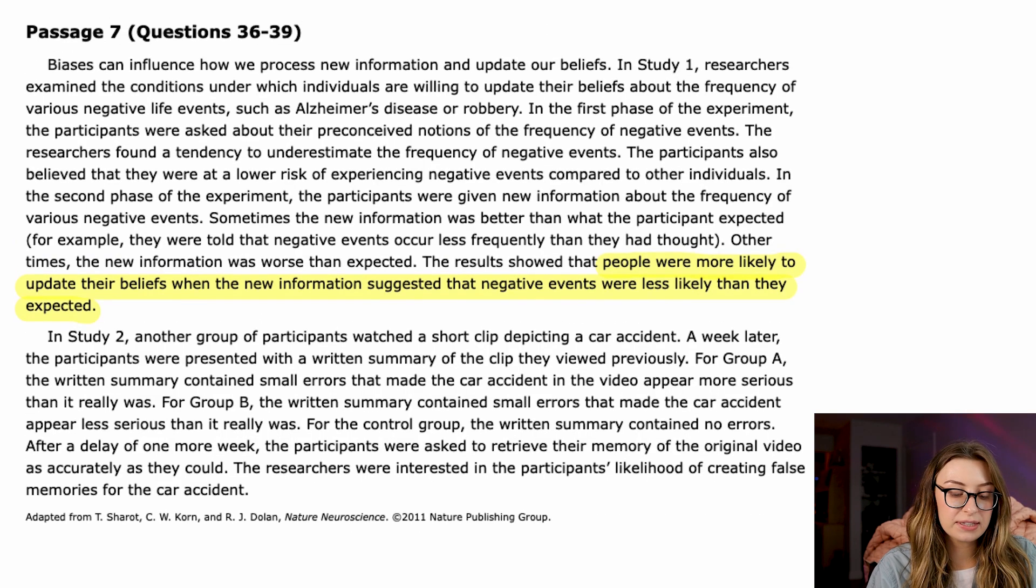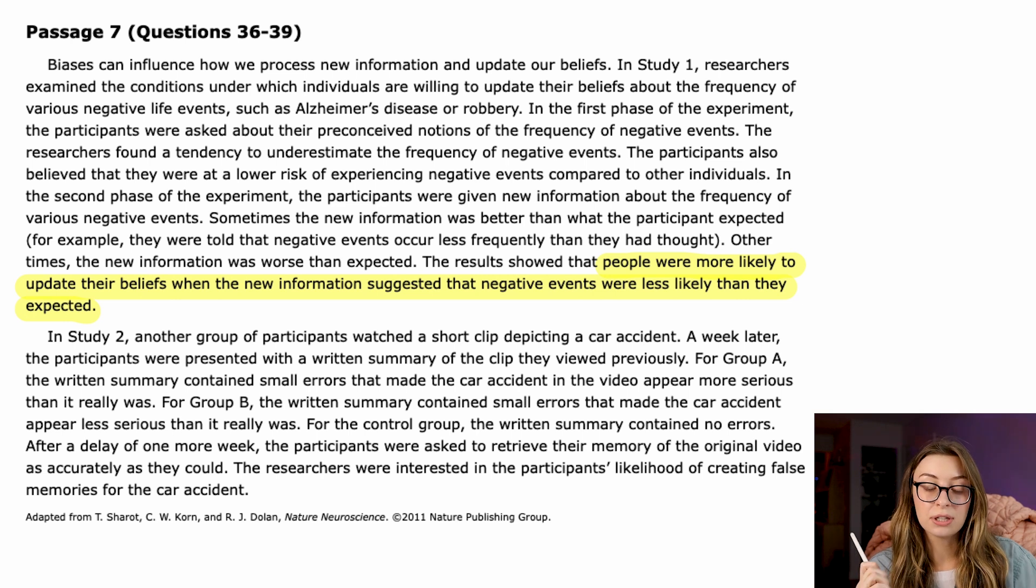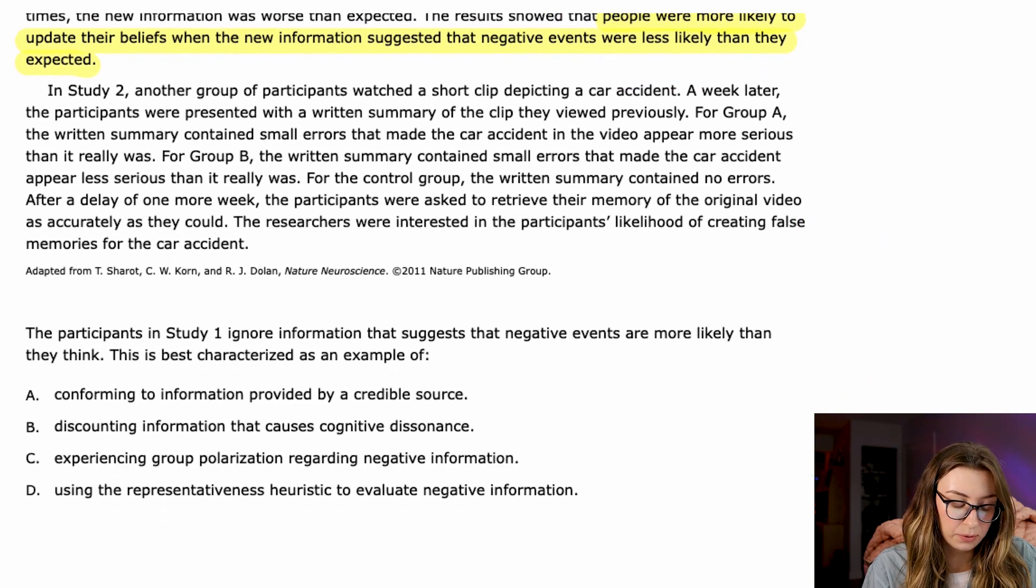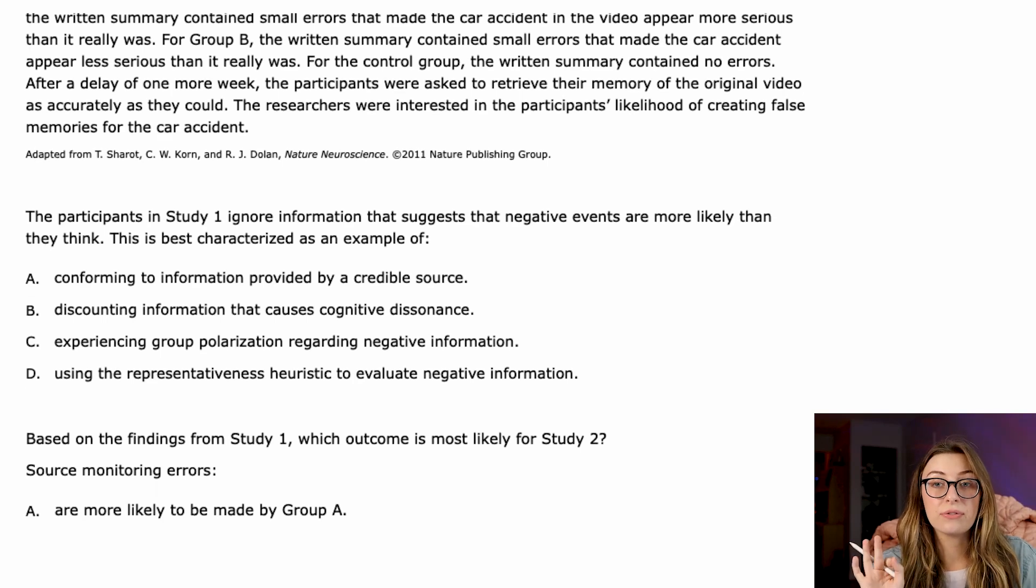The researchers were interested in the participant's likelihood of creating false memories for the car accident. So you can see that we were given Study 1, and they told us the results of Study 1. They told us what they did for Study 2, and they did not tell us the results. So what we're supposed to do in this situation, this is a classic AAMC psych-soc special, is we're supposed to apply the results from Study 1 to Study 2. These studies are very similar to one another. Sometimes you kind of have to really think out of the box about how they relate to one another and how you can apply the results to one another.